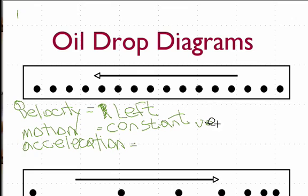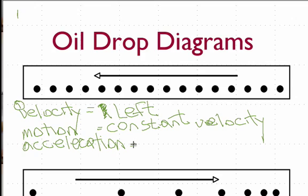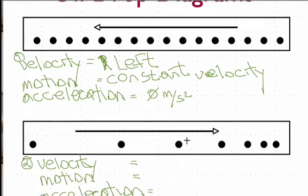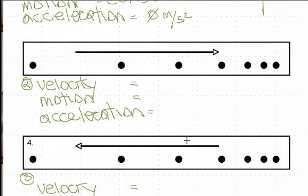Constant velocity means the velocity is not changing. If I'm going three meters per second, the next second I'm still going three meters per second. So my acceleration in this case is zero meters per second squared, and there's no direction associated with that.